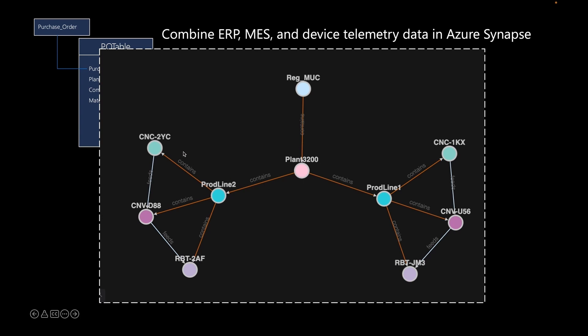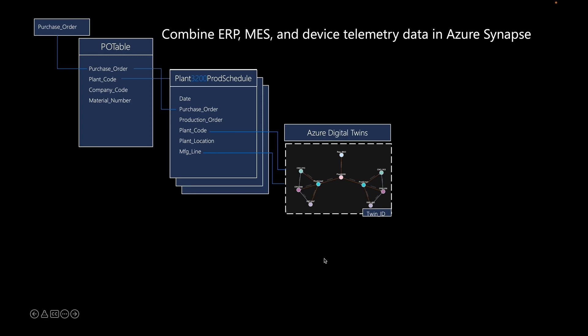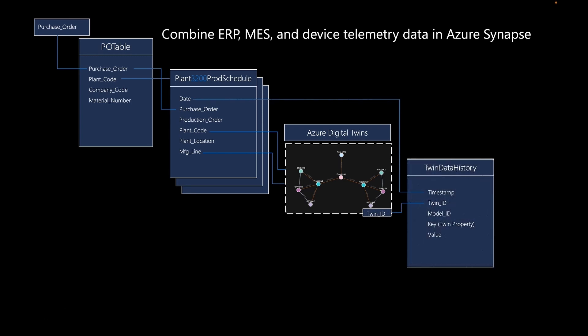That query will return the digital twin IDs for the CNC machine, the conveyor belt, and the robot that manufactured the widgets. Once she gets those twin IDs back, she can then filter the data history from all of her digital twins down to just those specific twins and look at a time range specific to the time of manufacture for that purchase order.